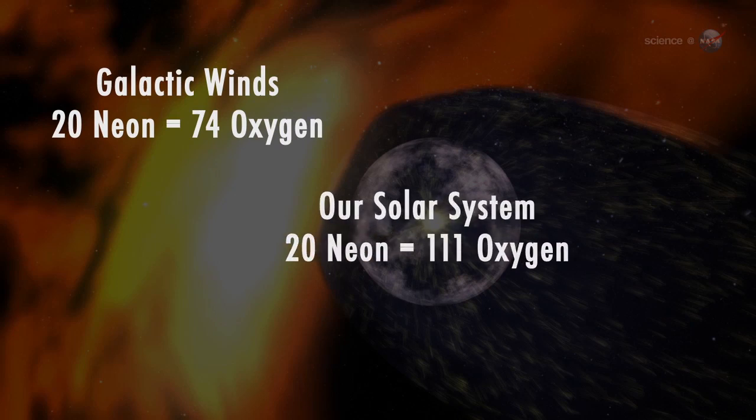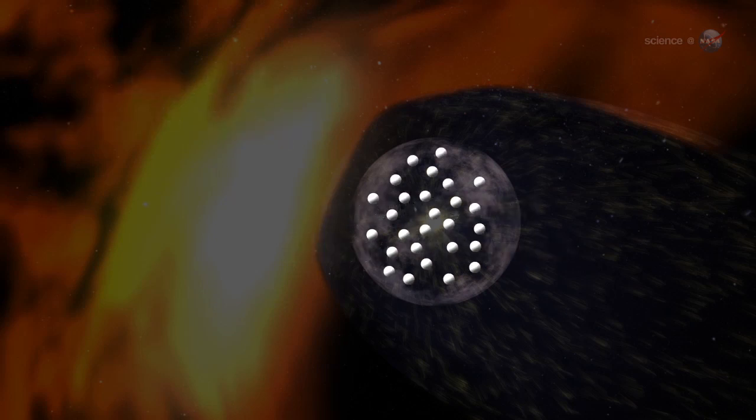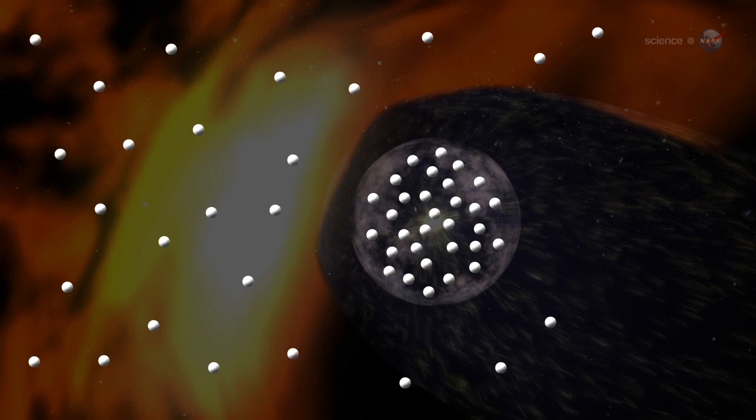That translates to more oxygen in any given slice of the solar system than in local interstellar space. Where did the extra oxygen come from? There are at least two possibilities, says McComas.